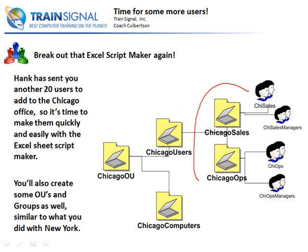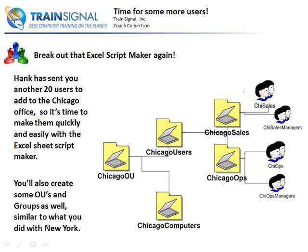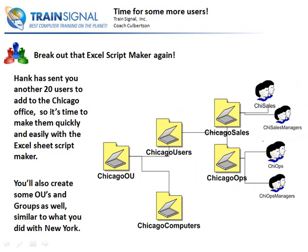For our Chicago users, we're going to be creating two separate OUs — one for Sales and one for Ops. Then we're going to create some groups: Chicago Sales and Chicago Sales Managers, and then Chicago Ops and Ops Managers. This is pretty much a review of what we've done previously for the New York office.